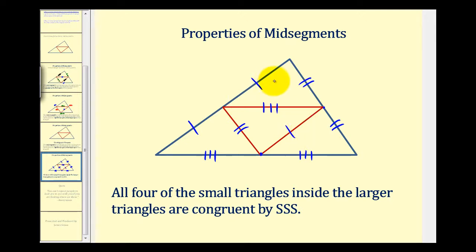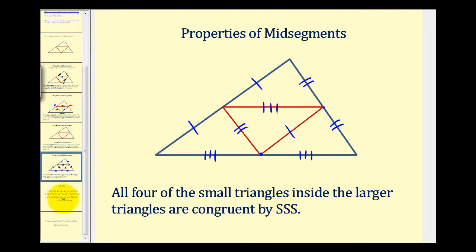Now notice that all three sides of each of these smaller triangles have one, two, and three hash marks. Therefore, they're all congruent by side, side, side. We'll take a look at some example problems using these properties in the next video. I hope you found this helpful.